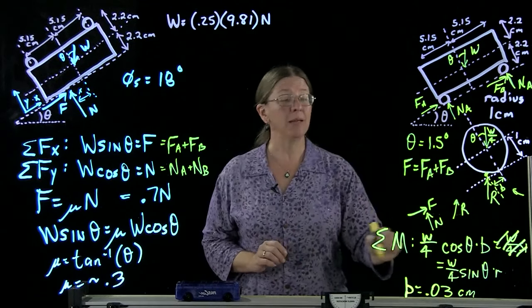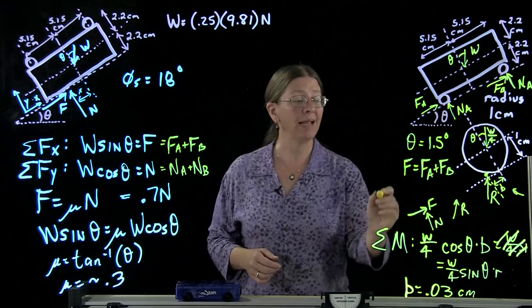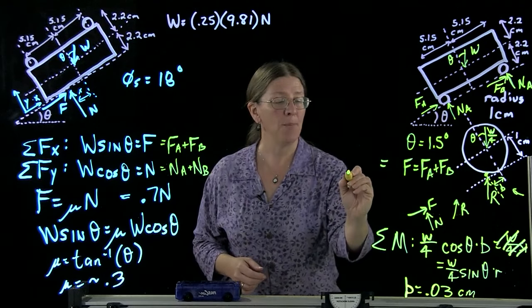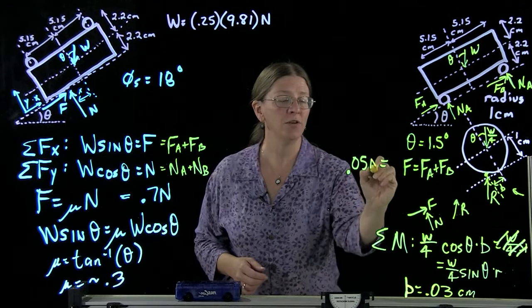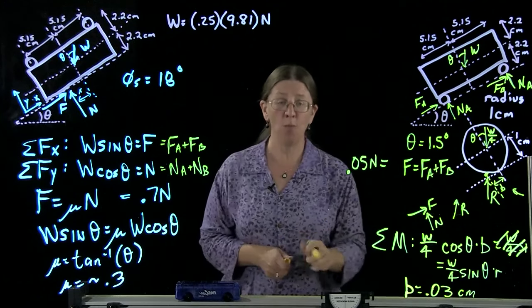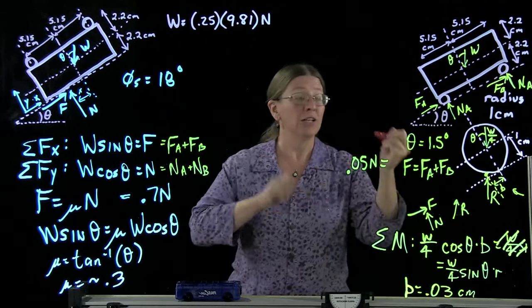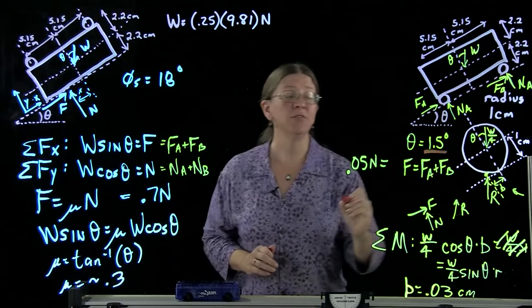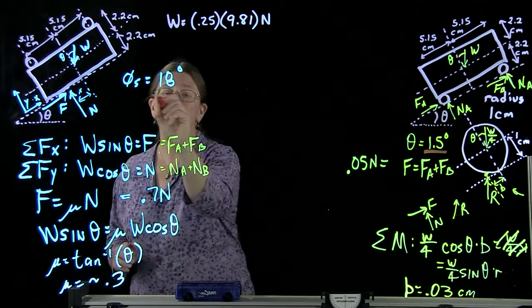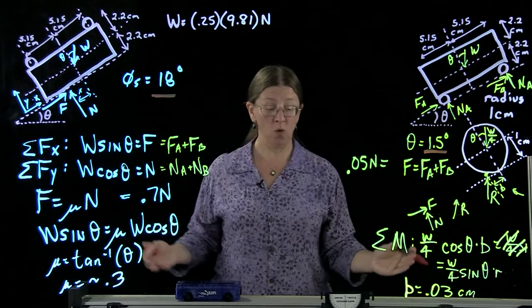Take that and plug it back into the equations of equilibrium. What do I get for F? My F value ends up being 0.05 newtons. 0.05 newtons. Now, a couple things are different. This one is very different from this one. And you know that. You know that if something rolls, it rolls much faster than it's going to slide.